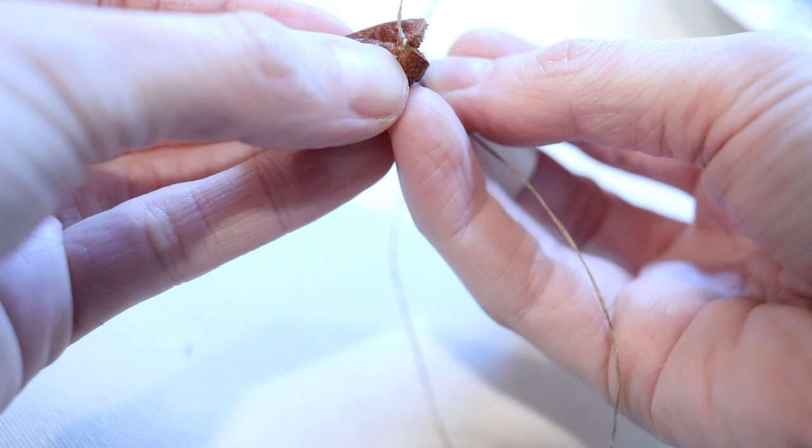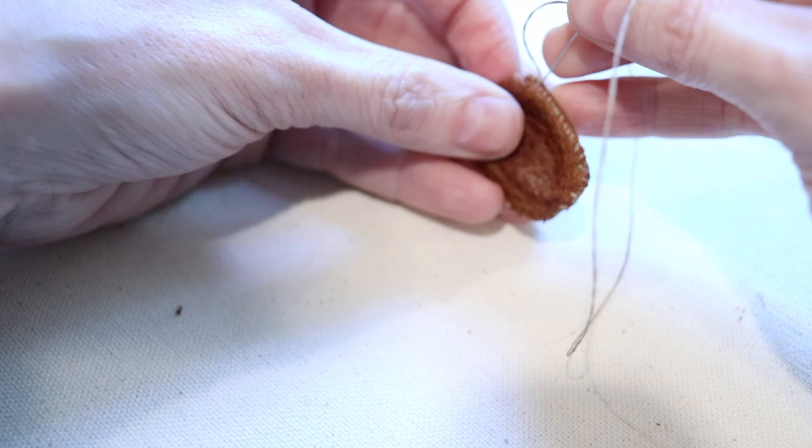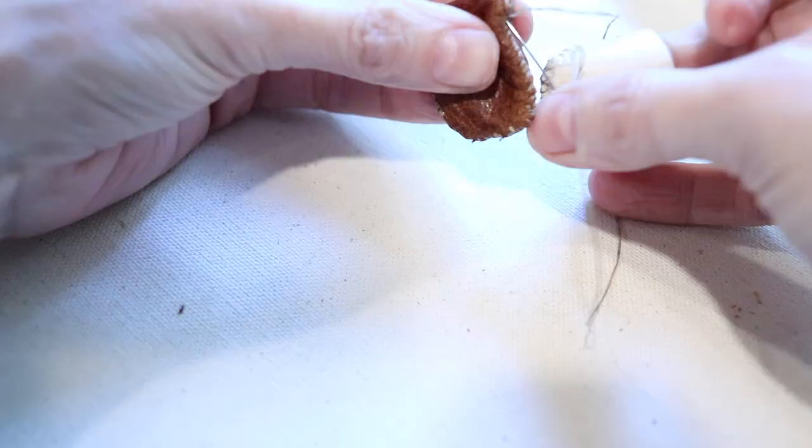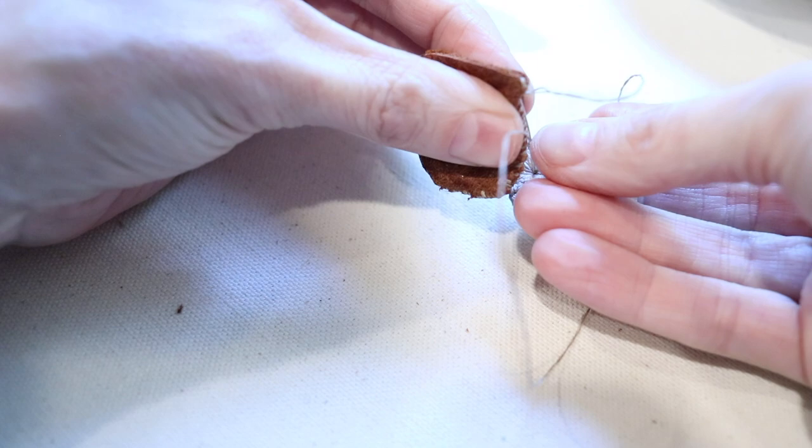So now it's time to bind off, and you can use any method that you are the most comfortable with. This is what I found worked the best for me in keeping my thimble really secure, especially down at that bottom seam.